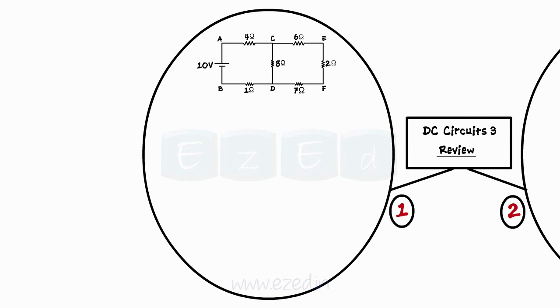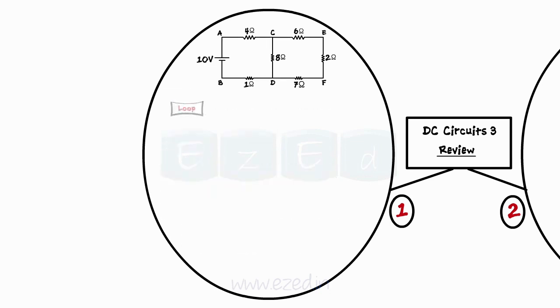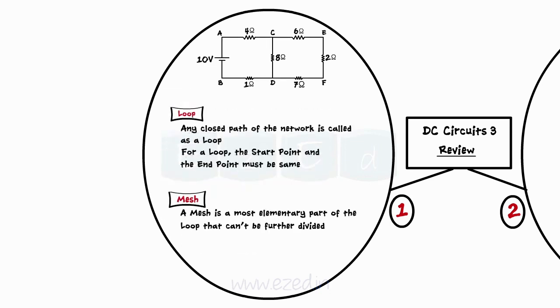In a DC circuit, a node is a point where two or more branches meet. A junction is a point where three or more branches meet. Any closed path is called as a loop and a mesh is the ultimate form of the loop that can't be subdivided further into smaller loops.